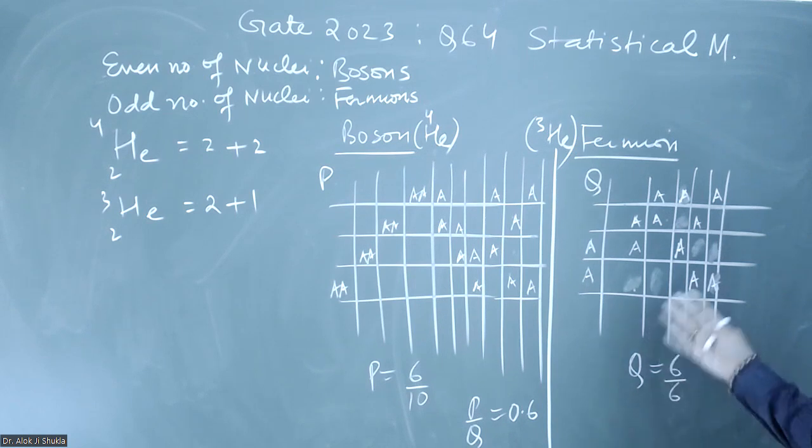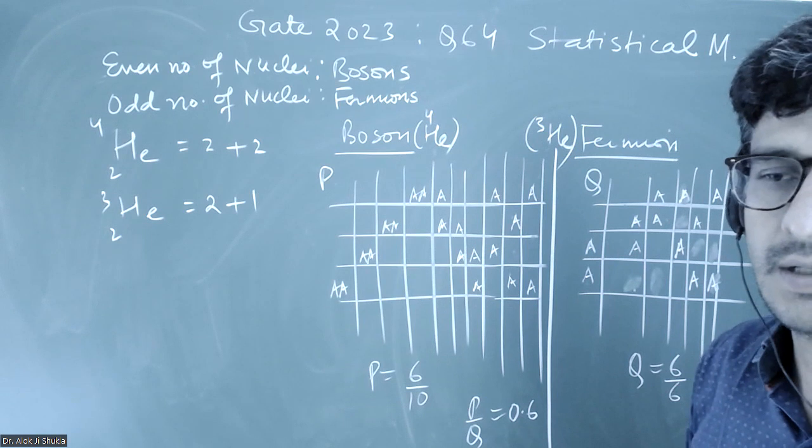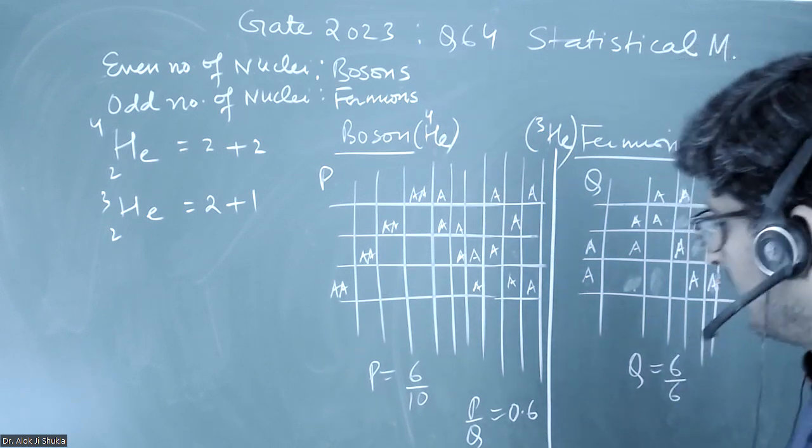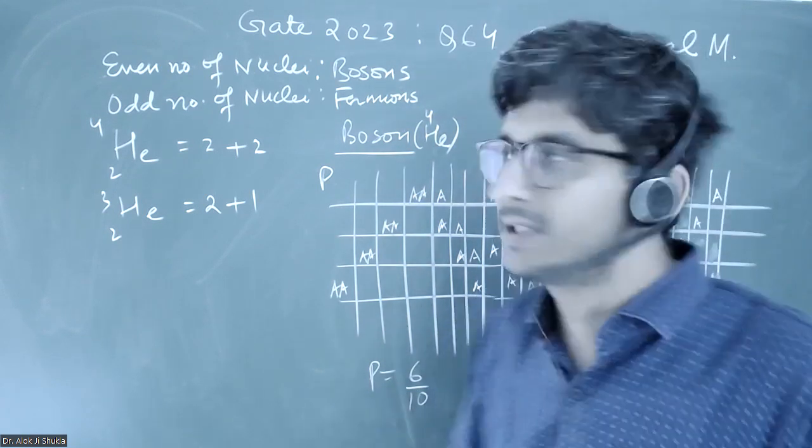When you see P by Q, that will be 0.6. This question was very straightforward. The only thing we have to figure out was that helium-4 will be boson, that you already know.